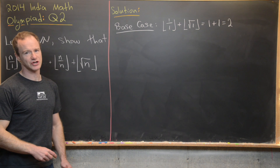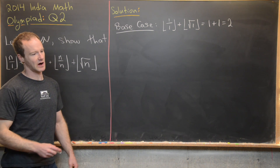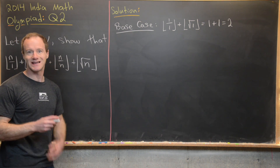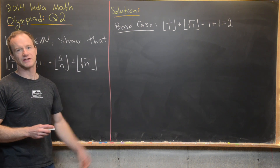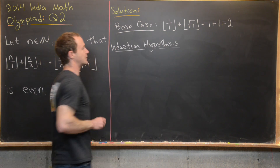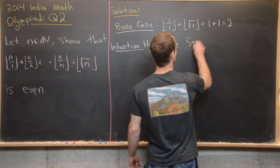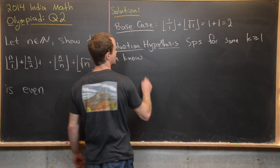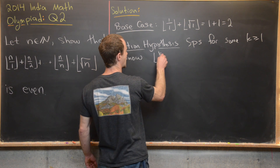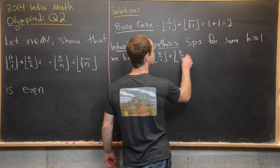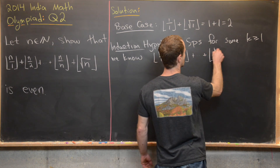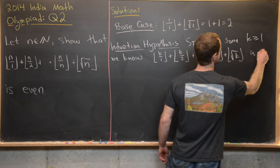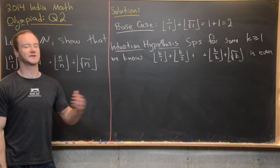Now let's make our induction hypothesis. For some k ≥ 1, we suppose that floor(k/1) + floor(k/2) + ... + floor(k/k) + floor(sqrt(k)) is even. We're supposing this statement is true for the kth case.